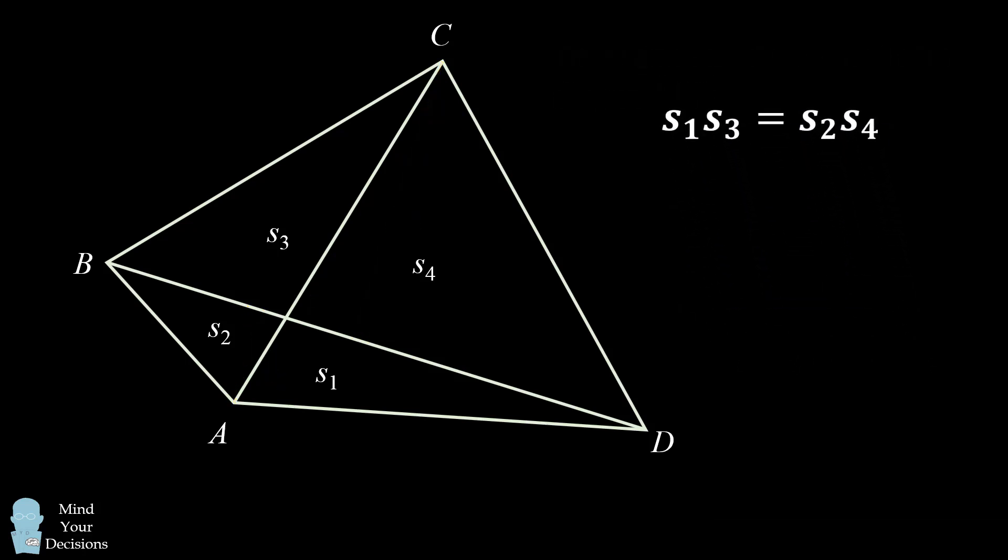We can now take this formula and use the specific numbers from our original problem to solve for x. We substitute in our values and we end up with x is equal to 6. Did you figure it out?